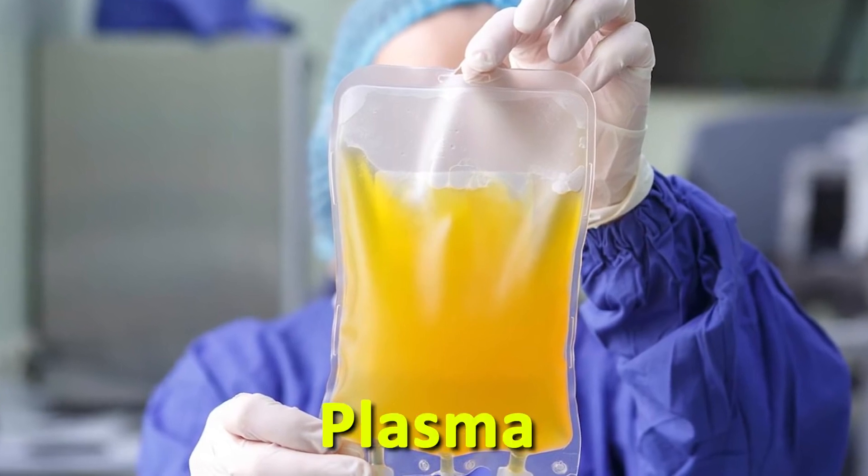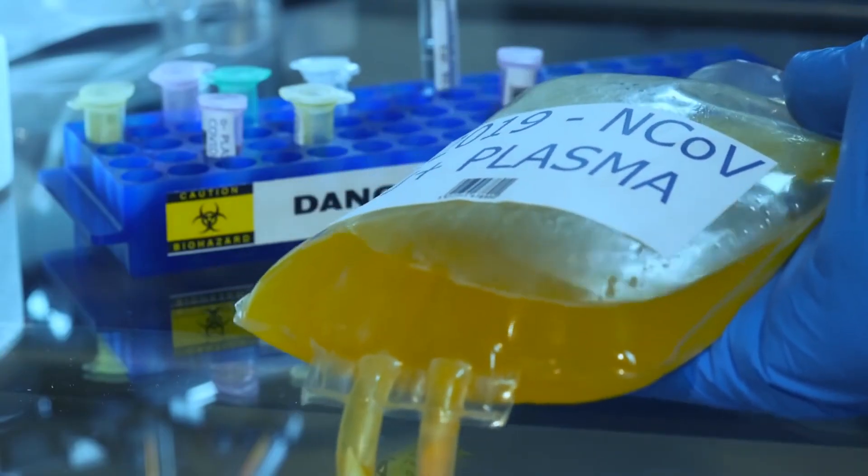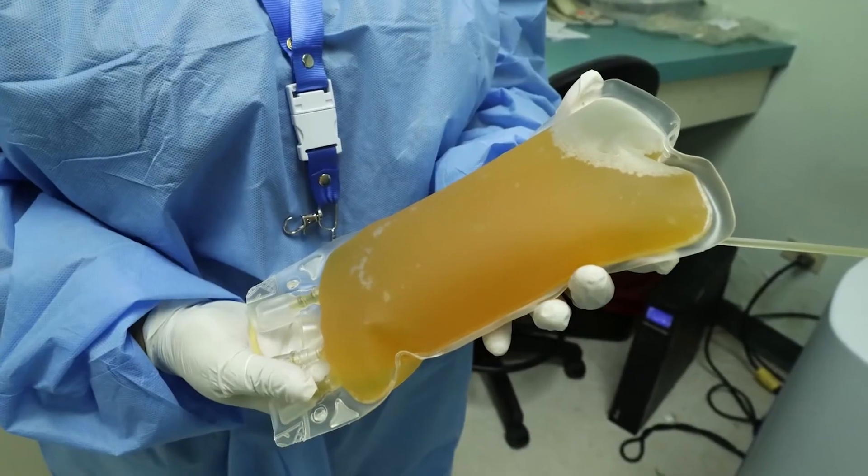And the liquid part is plasma. When plasma is separated from the rest of the blood, it looks like a light yellow liquid.